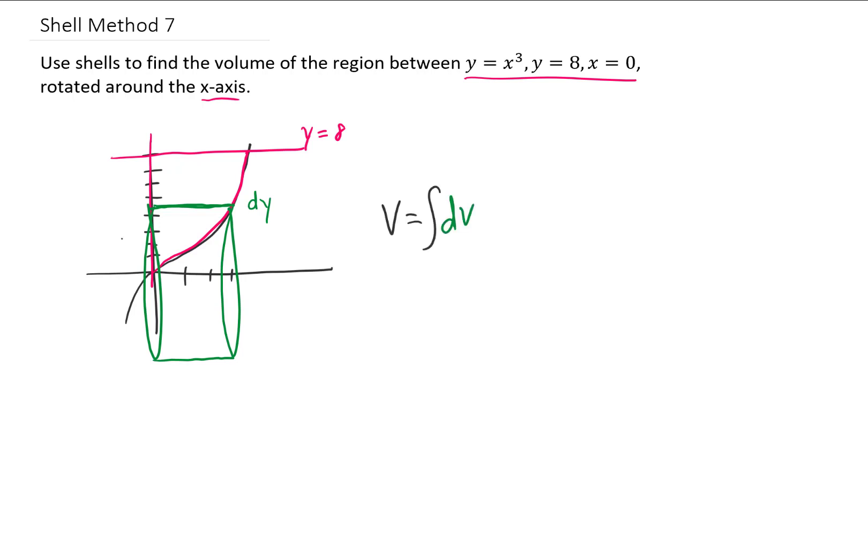We can find the total volume by adding up the volumes of each one of these little thin shells, and the volume of each one of those cylindrical shells is just going to be the surface area of the shell multiplied by dy. That's 2πrh dy.